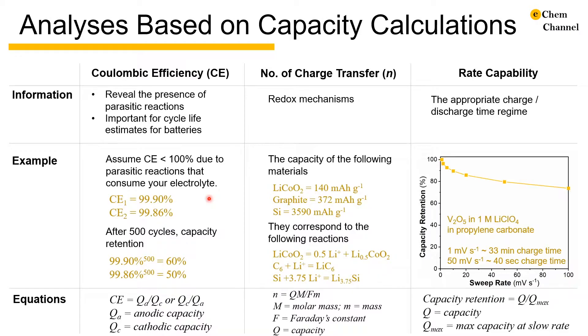However, when you cycle them 500 times, 99.9% coulombic efficiency results in a capacity retention of 60% and 99.86% coulombic efficiency gives only 50% capacity at the end of 500 cycles. This shows how a small difference in coulombic efficiency can make a big difference in the long run.